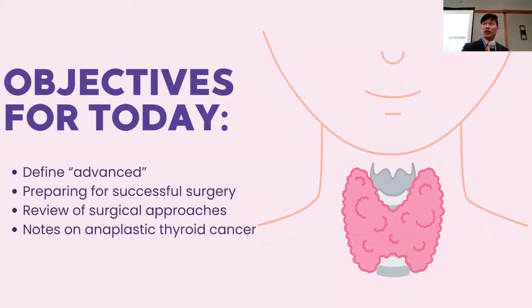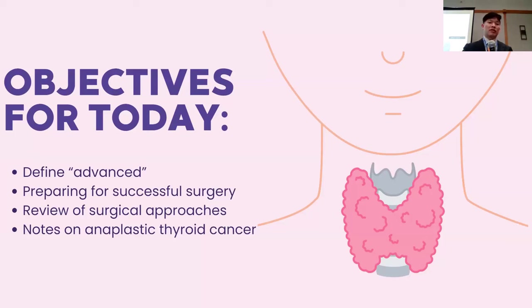My objectives for today: first, I want to come to a definition of what advanced thyroid cancer is, at least for us today. Give patients tips about how to make a plan with their physicians for a successful surgery when more advanced surgery is needed, a brief review of the different surgical approaches we use for advanced thyroid cancer, and then I'll end with a few notes on anaplastic thyroid cancer because there have been some recent changes about how we approach that particular entity.